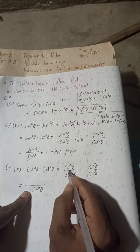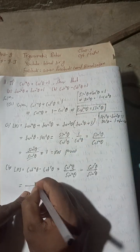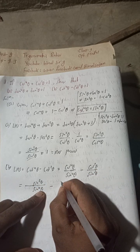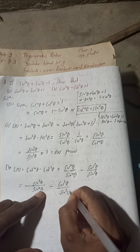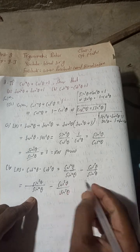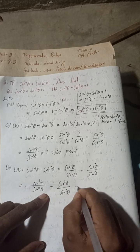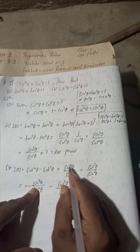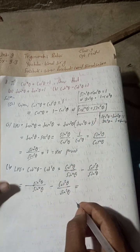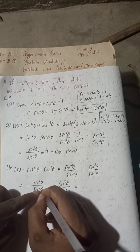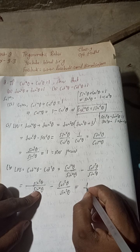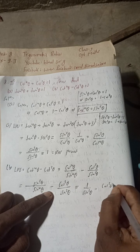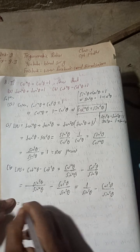What is cos⁴θ? cos⁴θ = sin²θ. So this becomes sin²θ/sin⁴θ - cos²θ/sin²θ. Do not take LCM here — it will not lead to the solution. This is the tricky part where most students get confused. Now sin²θ/sin⁴θ simplifies to 1/sin²θ. So we have 1/sin²θ - cos²θ/sin²θ.